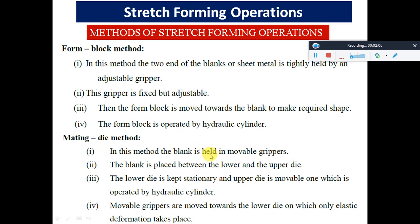In the matting die method, the blank is held in movable grippers and placed between the lower and upper die. The lower die is stationary while the upper die is movable, operated by a hydraulic cylinder. The movable grippers move towards the lower die where only elastic deformation takes place.